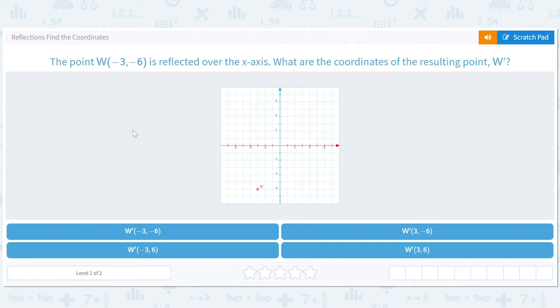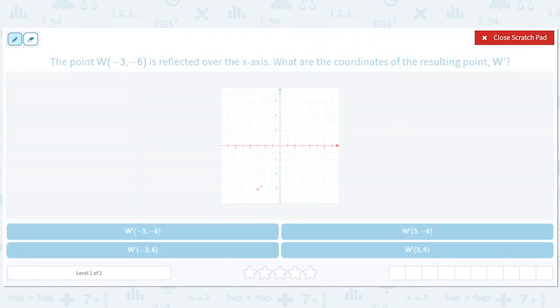I hope you guys are ready for some reflections. We're going to find the coordinates by reflecting. We've got a point (-3, -6) which is labeled W here, and we want to reflect it over the x-axis. That means there's a mirror here - we want to reflect right over the x-axis.